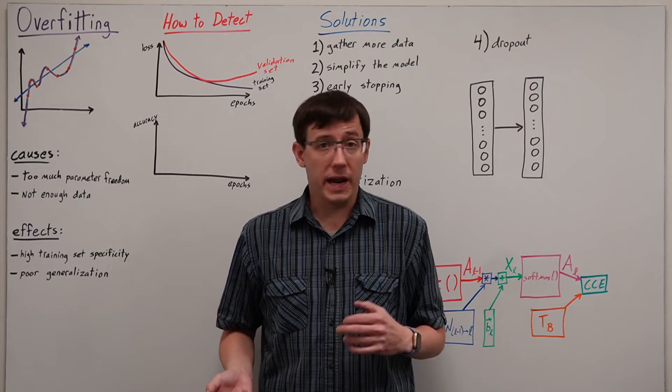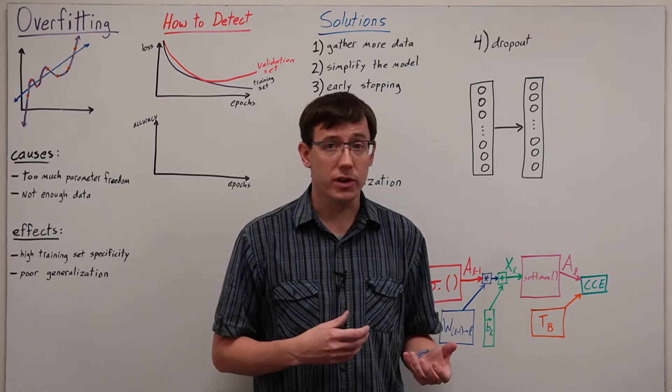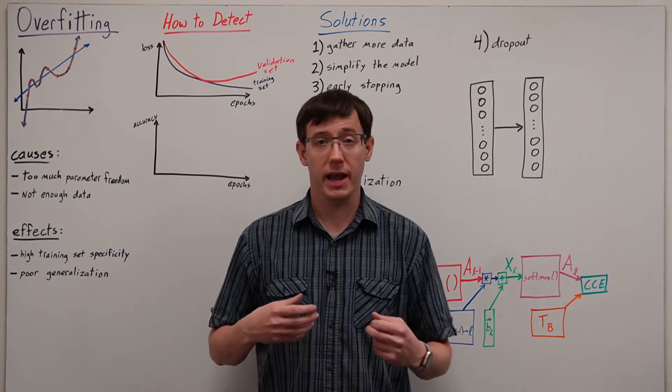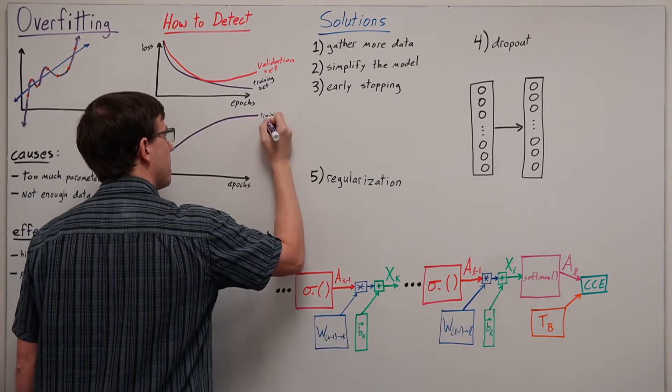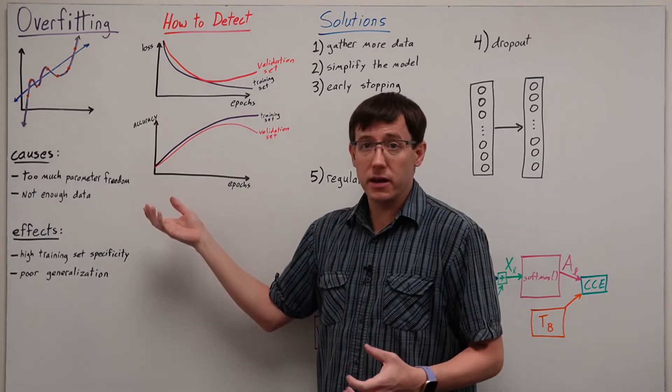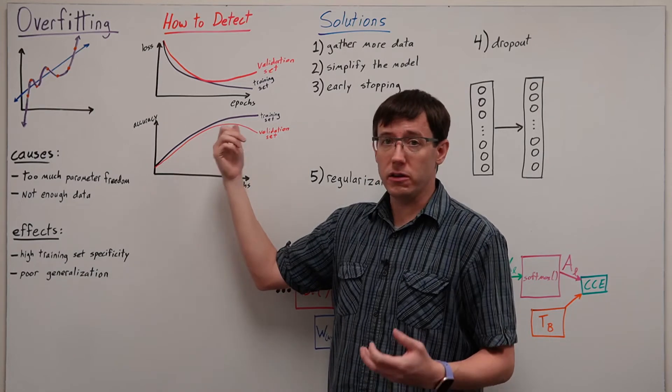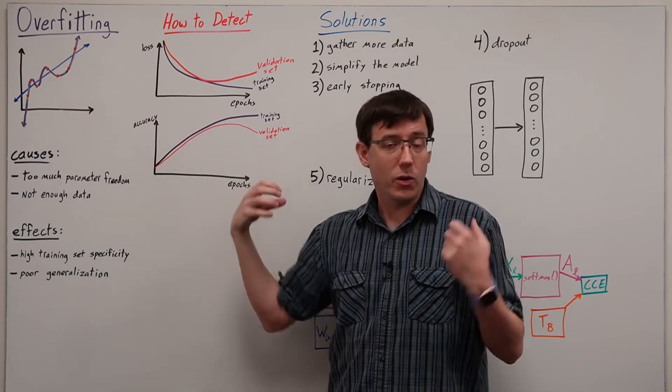Similarly, if we're working on a classification problem, we can look at the accuracy of the model on both the training and validation sets. And once again, if we start to see the results on the validation set diverge, that's a sign that we're overfitting.